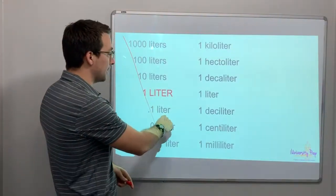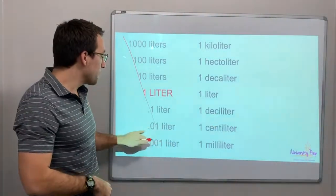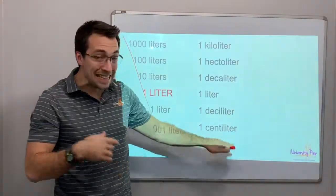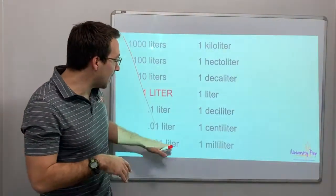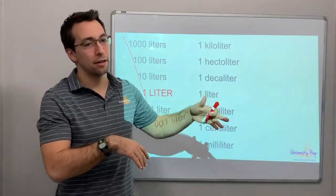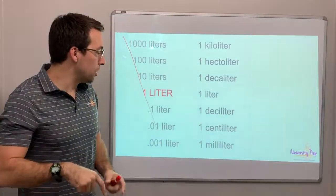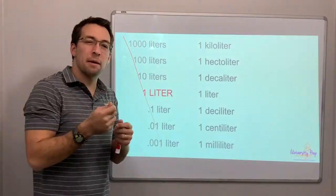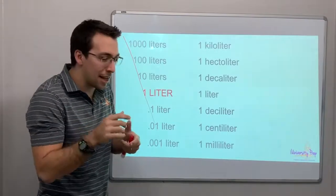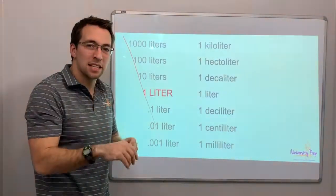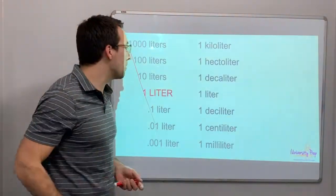And then again, a tenth of a liter is a deciliter. A hundredth of a liter is a centiliter. And then a thousandth is a milliliter. That's cool. When you think about milliliters, you think about maybe medicine. When you're a kid and you took the cough medicine, it's measured in milliliters. It's a small measurement.